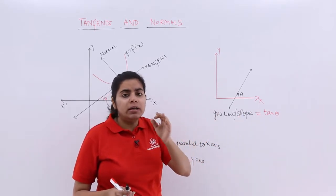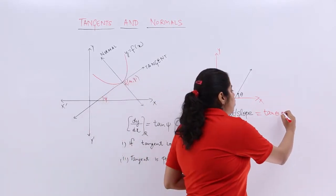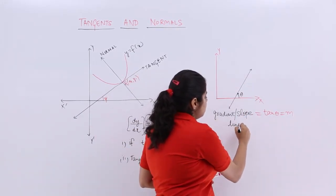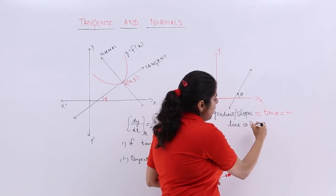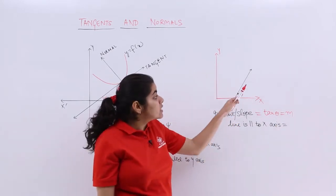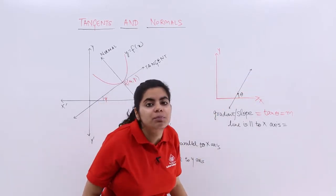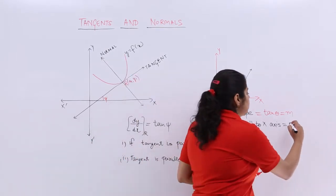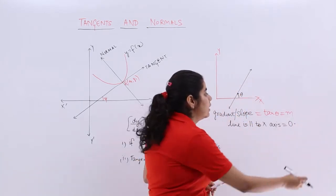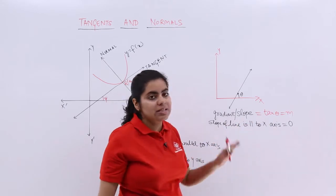Slope is very important in consideration of tangents and normals. The slope is usually denoted by m. If the given line is parallel to the x-axis, the angle it makes with the positive direction of the x-axis is 0, so the slope is nothing but 0. That is, the slope of a line parallel to the x-axis is 0.